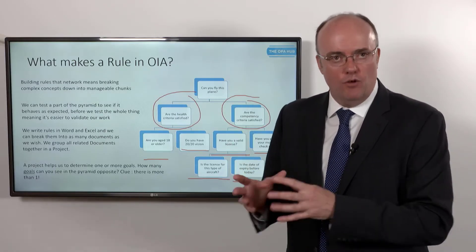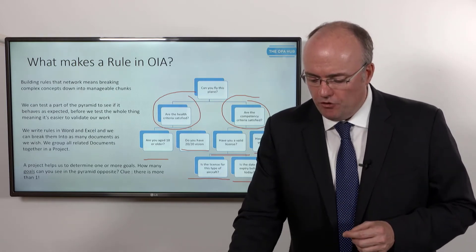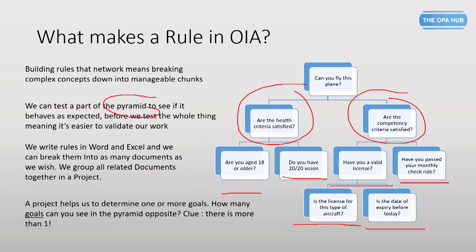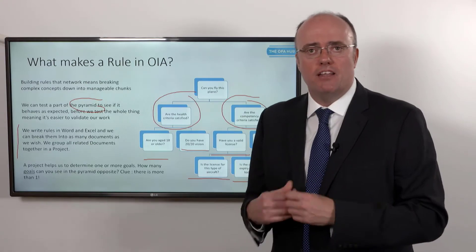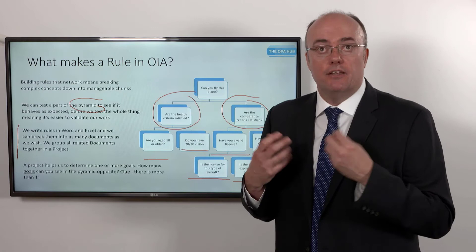We're going to write this in Word, and I want you to notice a couple of things. I've called this a pyramid, because it really is like a tree structure — this will help later when we discuss how Oracle Intelligence Advisor reads your text. We can write this in Word and Excel across as many documents as we wish: one single paragraph or four different documents. It's our choice, whatever makes sense for our colleagues and way of working.